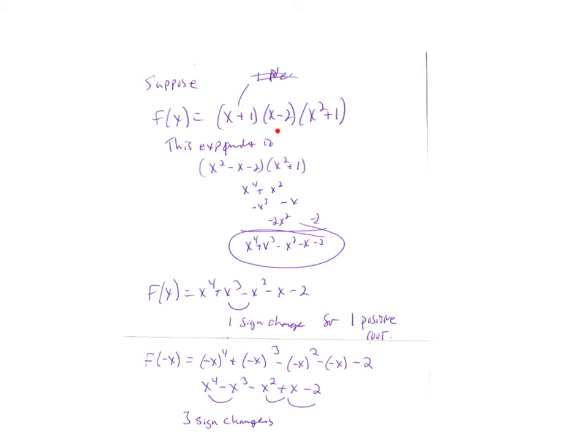And this is a positive zero when x equals two. And then this is a complex zero because if we try to solve that for zero, we'd get the plus or minus the square root of negative one. So this polynomial has one negative, one positive, and two complex. So how does that work in Descartes' Rule of Signs is the question we're trying to answer.